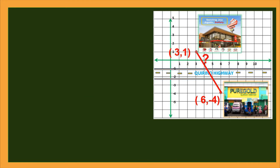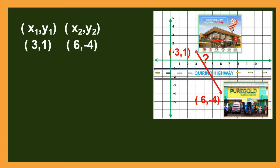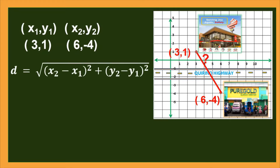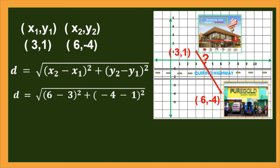Let's go back to our problem. What is the distance from (0,31) to (0,6-4) on the coordinate plane? Let us assign the first point as (3,1) and the second point as (6,-4). To find its distance, we will be using the distance formula. First, identify the value of x₂, which is 6. x₁ is 3. y₂ is negative 4. And y₁ is 1. Then substitute all those values into our given formula.